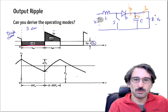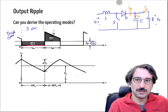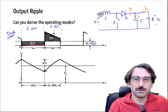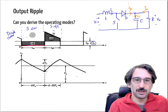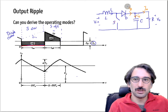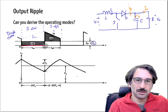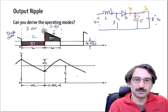Once the inductor is charged, we open the switch. When the switch is OFF, all the inductor current flows through the diode branch. The inductor current waveform ramps up and down. When the switch is ON, diode current is zero, but once the switch turns off, the diode conducts and the diode current equals the inductor current, which is now discharging.